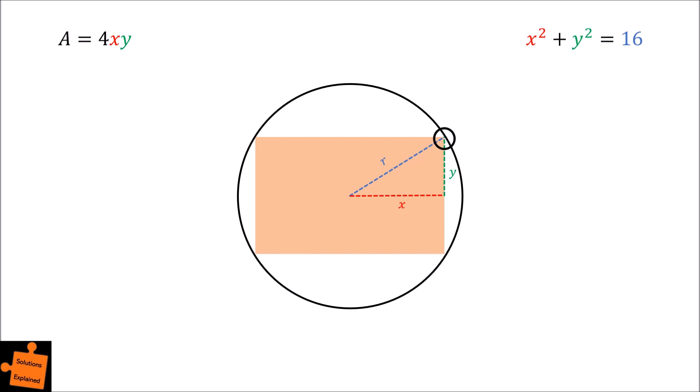To do this, rearrange the equation of the circle to obtain y as a function of x. Firstly, take away the x squared from both sides of the equation, and then take the square root to obtain y is equal to the square root of 16 minus x squared.